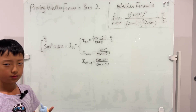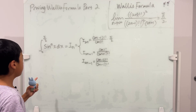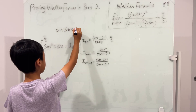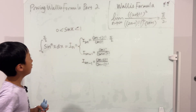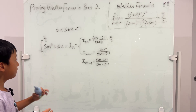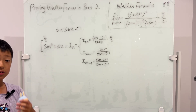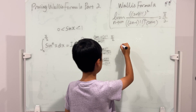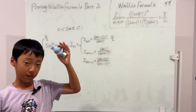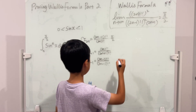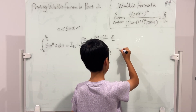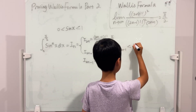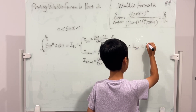Now, on the interval from 0 to π/2, sin(x) is between 0 and 1. This means that larger powers applied to sin(x) give smaller values, so the greater the power, the smaller the integral. Therefore: I(2n+1) < I(2n) < I(2n−1).